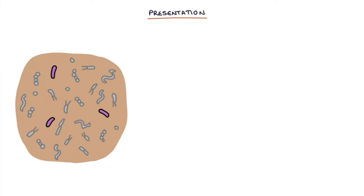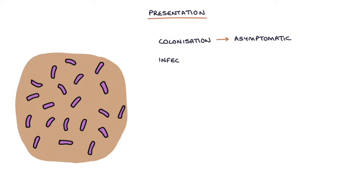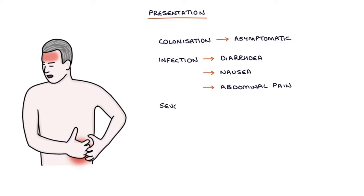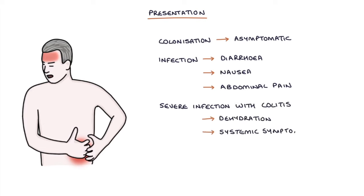Let's talk about the presentation. Colonization, where the bacteria live harmlessly in the intestines, is usually asymptomatic. Infection presents with diarrhea, nausea, and abdominal pain. Severe infection with colitis can present with dehydration and systemic symptoms such as fever, tachycardia, and hypotension.